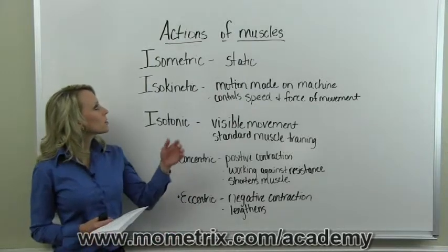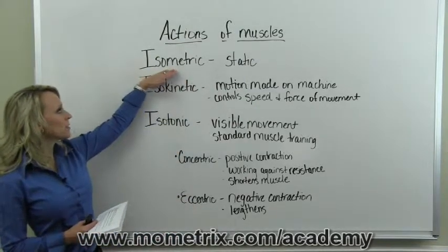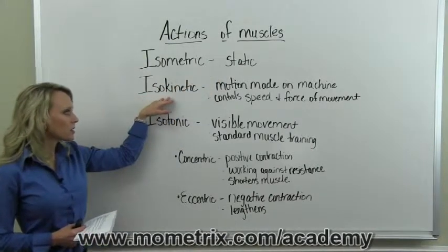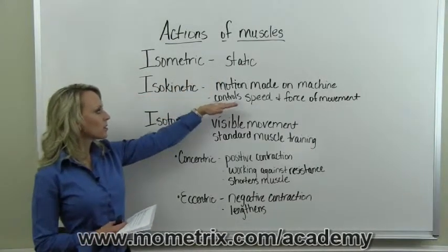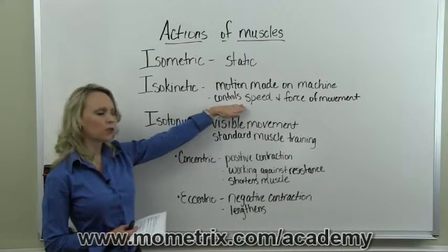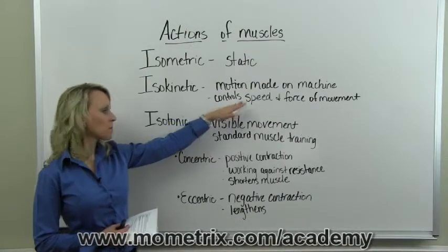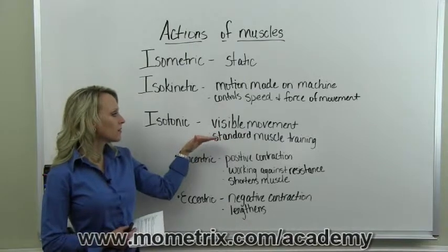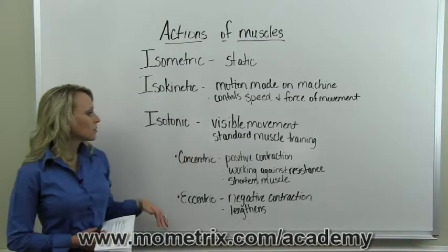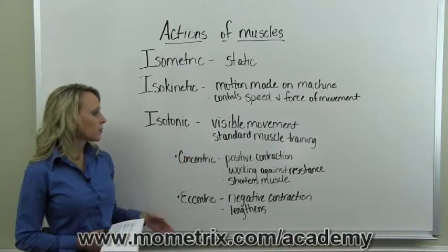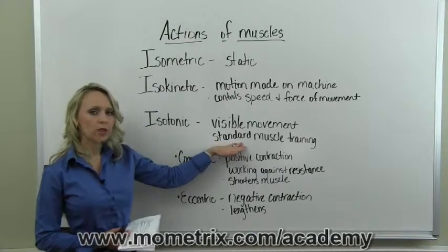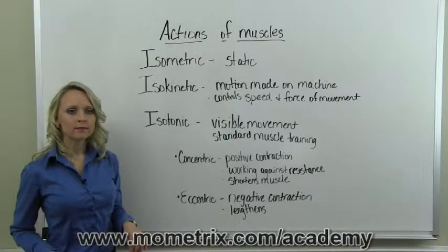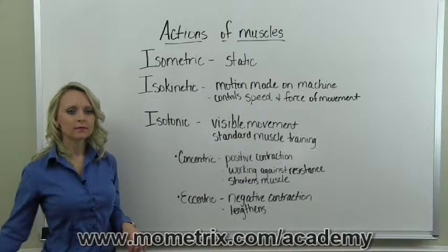So the muscles can perform isometric or static exercise, isokinetic action requiring a machine to control the speed and the force of the movement, or isotonic, which is the actual movement of the muscle and joint, typically referred to in standard muscle training.